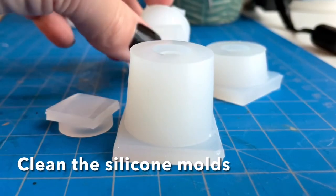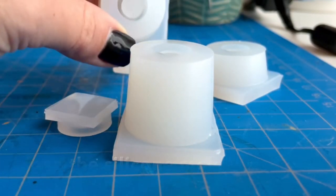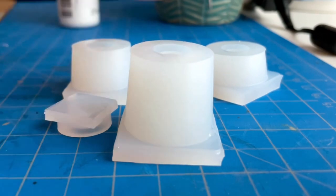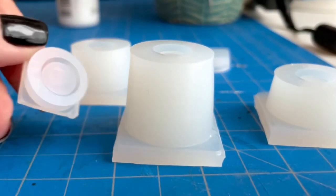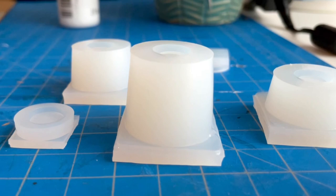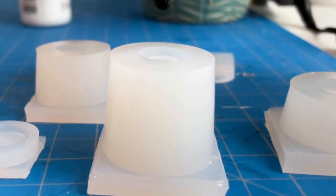One of the first things that you want to do is wash your silicone molds with some soap and water and make sure that there is no dust or anything inside of them because that will show up in the resin. I had already washed mine earlier and let them dry so that there wouldn't be any water inside.